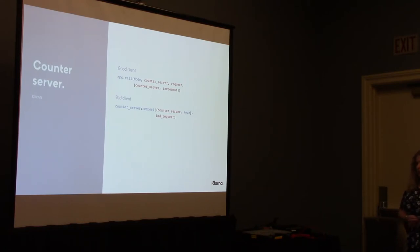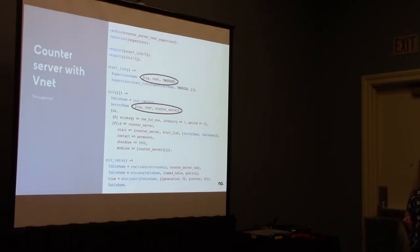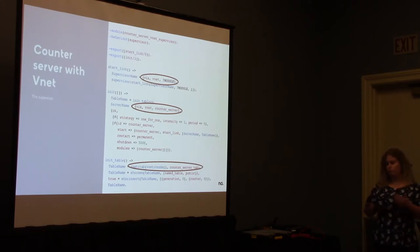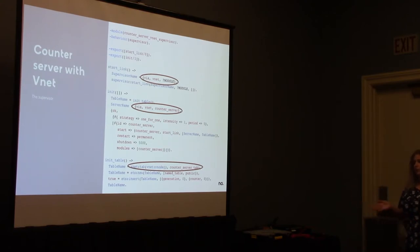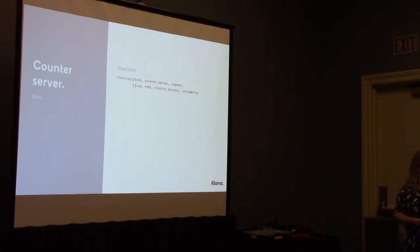Now it's time to add VNet to the model. What we need to change: we need to use the name registry service that VNet provides, to have unique names assigned to the ETS tables. This is what we need to change in the supervisor. In the server, we don't need to change anything. For the good client, native RPC calls won't work now, so we need to use VNet RPC, which is a synchronous call to the VNode, and then we pass the MFA. We also need to use the name registry service that VNet provides.